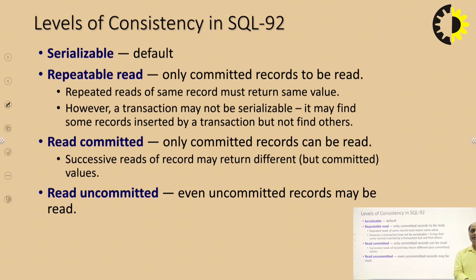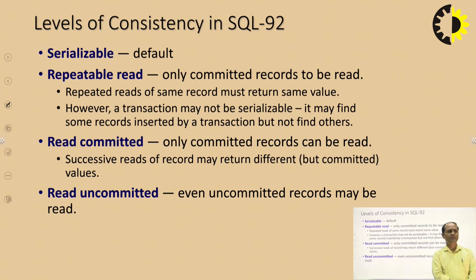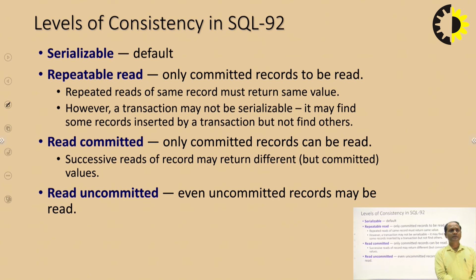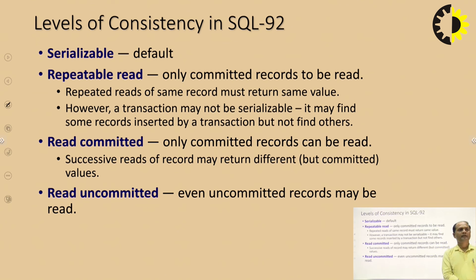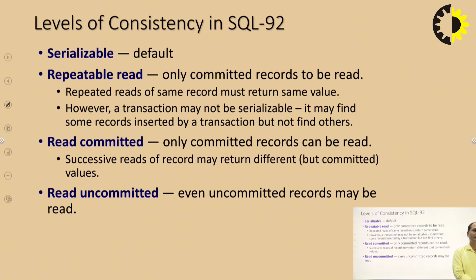The level of consistency depends on the database. In SQL 92, by default it is serializable. The consistency levels include: serializable (default), repeatable read — only committed records can be read and repeated reads of the same record must return the same value (though a transaction may find some records inserted by another transaction but not others), read committed — only committed records can be read but successive reads may return different values, and read uncommitted — even uncommitted records may be read.